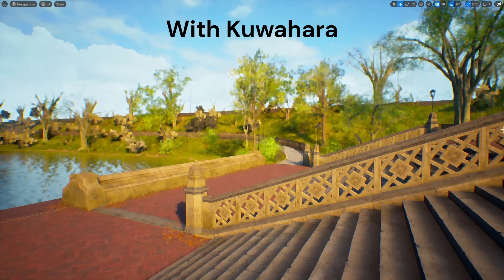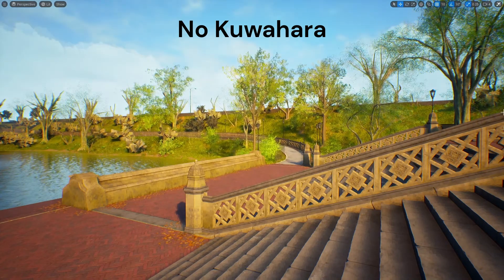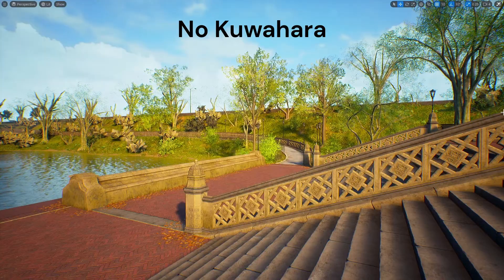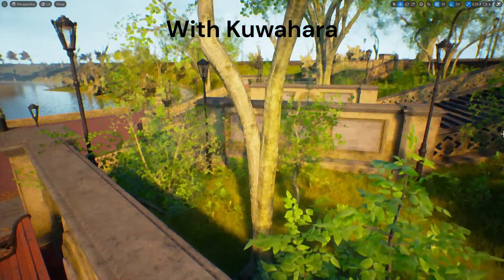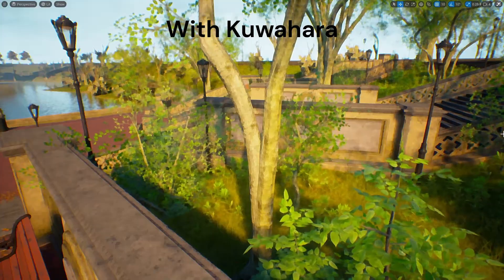Today we are going to see the implementation for the Kuwahara filter. This filter is used to create a painting-like effect from an input image, basically removing some details, making a kind of stylized look.